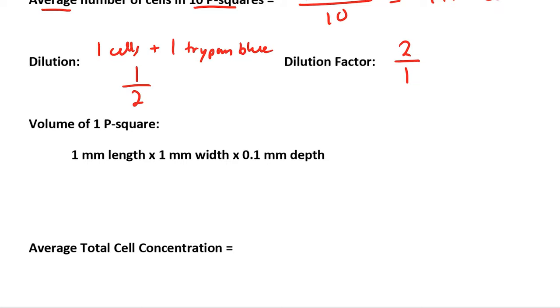The volume of 1 P-square, we can calculate based on the dimensions. A P-square is 1 millimeter long, 1 millimeter wide, and the depth between the hemocytometer and the cover slip is 0.1 millimeters. Multiply those together, 0.1 millimeters cubed.